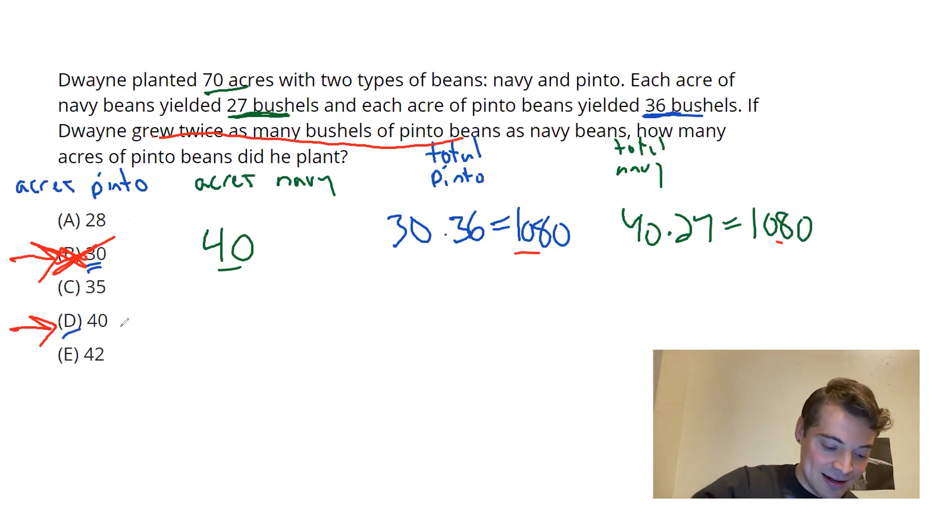But let's try choice D and see what happens. If I have 40 acres of pinto, I have to have 30 acres of navy to get to 70. And those 40 of pinto still have 36 an acre. So 40 times 36, that's going to be 1440.